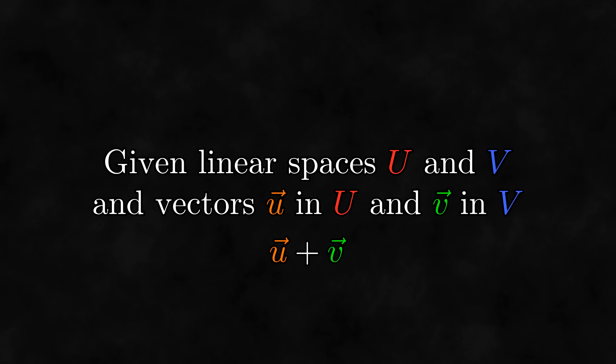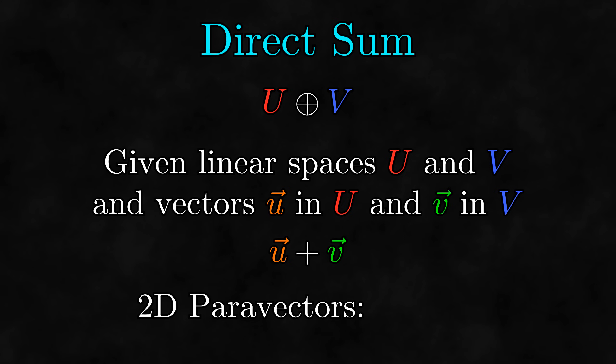This creates a new, bigger linear space that we call the direct sum of the two original spaces. We represent the direct sum with this funny O-plus symbol. It's important to note that the direct sum is an operation on linear spaces, not on vectors. It takes two linear spaces and produces a bigger linear space that contains both of them. For example, think of two-dimensional paravectors. They are the direct sum of the real numbers and two-dimensional vectors, which are often called R-squared because they can be represented with two real numbers.